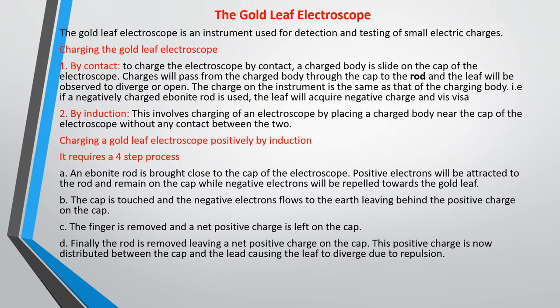The gold leaf electroscope is an instrument used for detection and testing of small electric charges. Most laboratories may not have it, but you can construct it. It is a simple instrument that has a cap, and there is a rod inside that has a gold leaf on it. The gold leaf can expand — it can diverge — or it can contract, as the case may be.